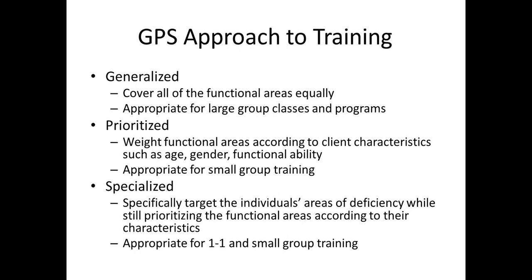The highest level of training would be specialized training — working one-on-one with a client, or in a small group where you've done all the assessment work and know their individual needs. Then you can tailor everything according to their needs and progress them according to their own individual capabilities as they go through their training program — their effort and how well they respond to training. That requires going through a lot of functional assessment to really learn where their deficits and strengths are. Our Functional Aging Specialist Certification teaches you those key assessments.